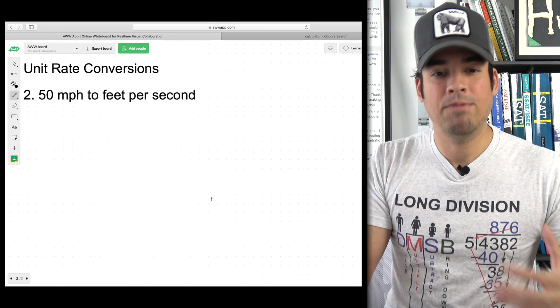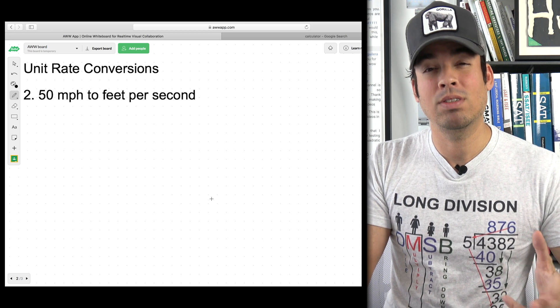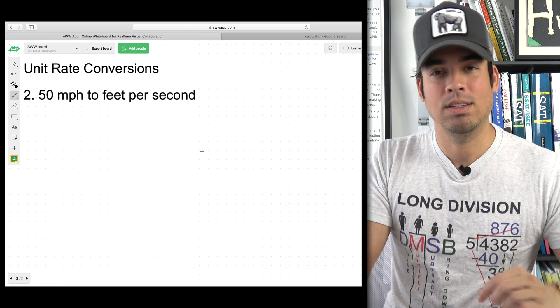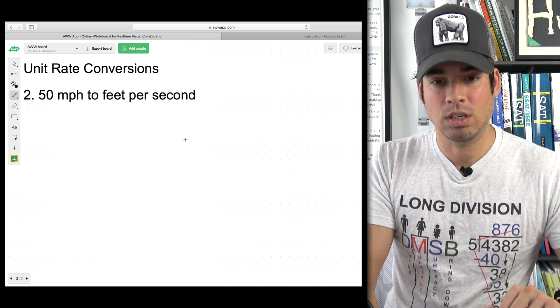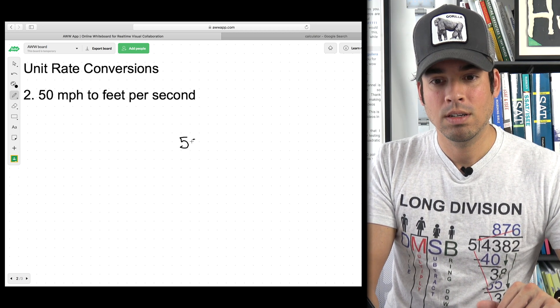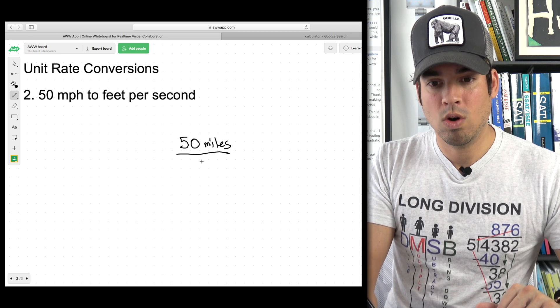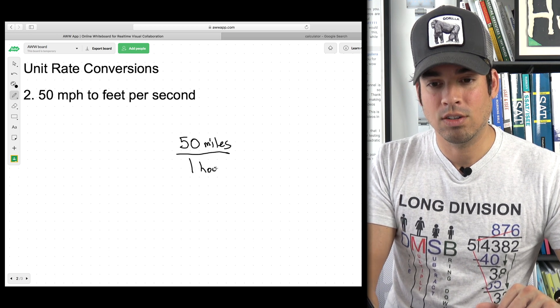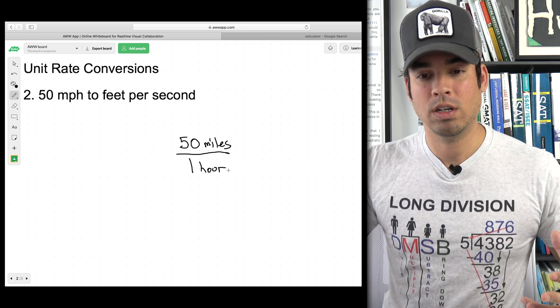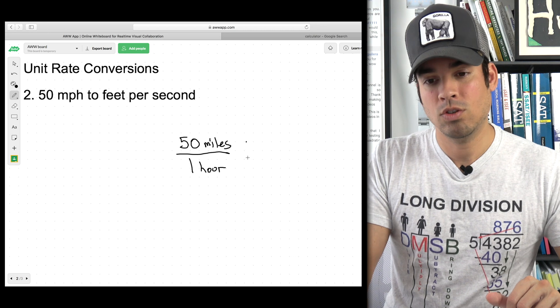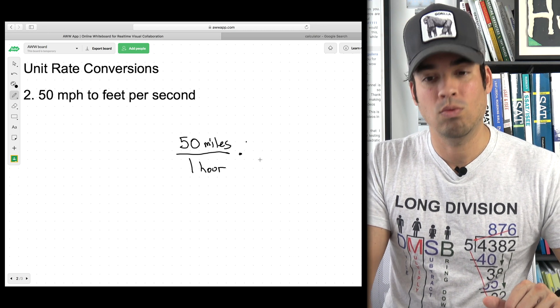Example number two we have 50 miles per hour to feet per second. Now we are converting two units. So this is where the camp method comes into play and it gets a little more interesting. So I'm going to put that 50 miles per one hour right in the center. Now I'm going to choose which unit I want to convert first. I want to convert the miles to feet or the hours to seconds. Let's go with the miles to feet. So I'm going to go to the right with that.